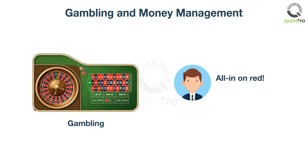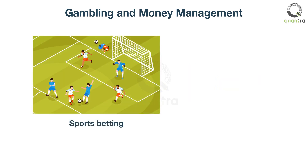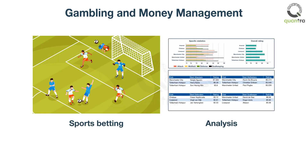Going all in on red in the casino can cause excitement, but the fun of gambling would not last too long in this case. In sports betting, even if we believe that we have a superior analysis and our team has an impressive track record, there are risks such as injuries. Therefore, many have identified the necessity of bet sizing to avoid risking everything on one bet.